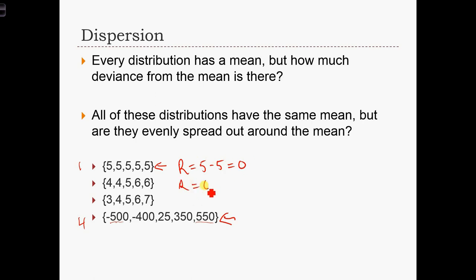Here we have range equals 6 minus 4, which is 2. Here it's 7 minus 3, and here it's 550 minus minus 500, which equals 1,050.